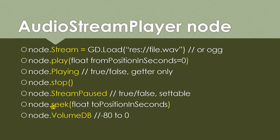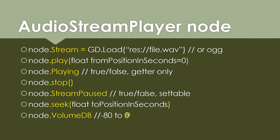The seek method can be used to fast forward through the sound. For example, if you want to go to five seconds in, call seek and pass five — that's in seconds. The volume_dB property controls the volume. Zero is the loudest and negative 80 is the lowest, so it ranges from negative 80 to zero.